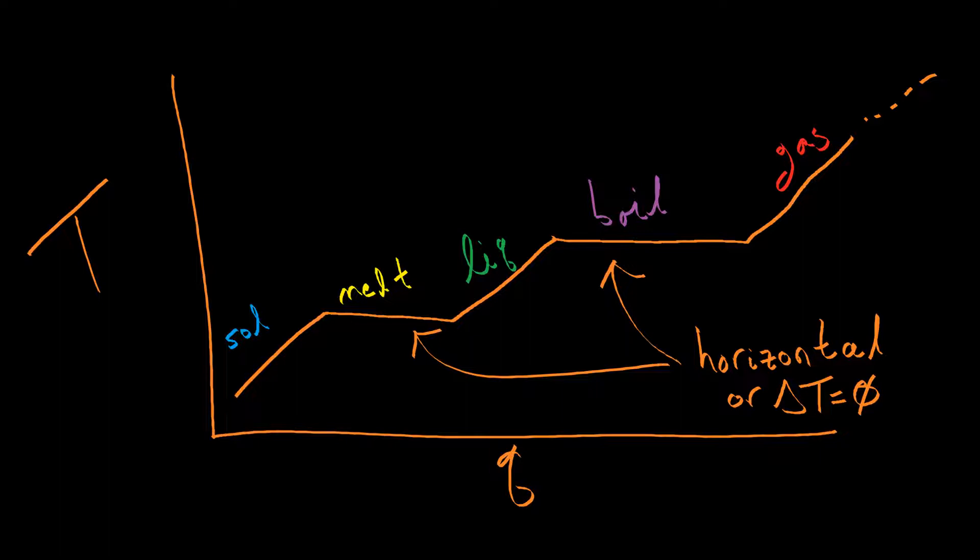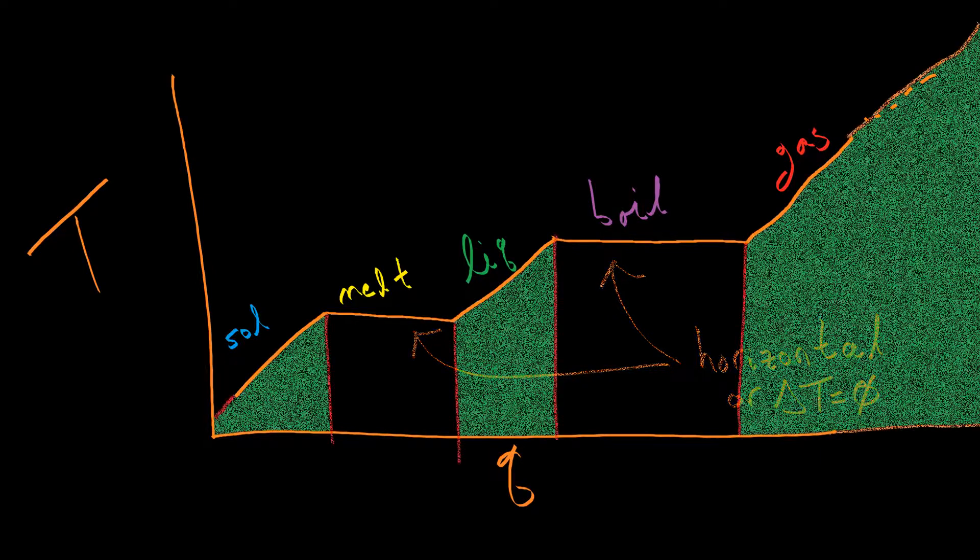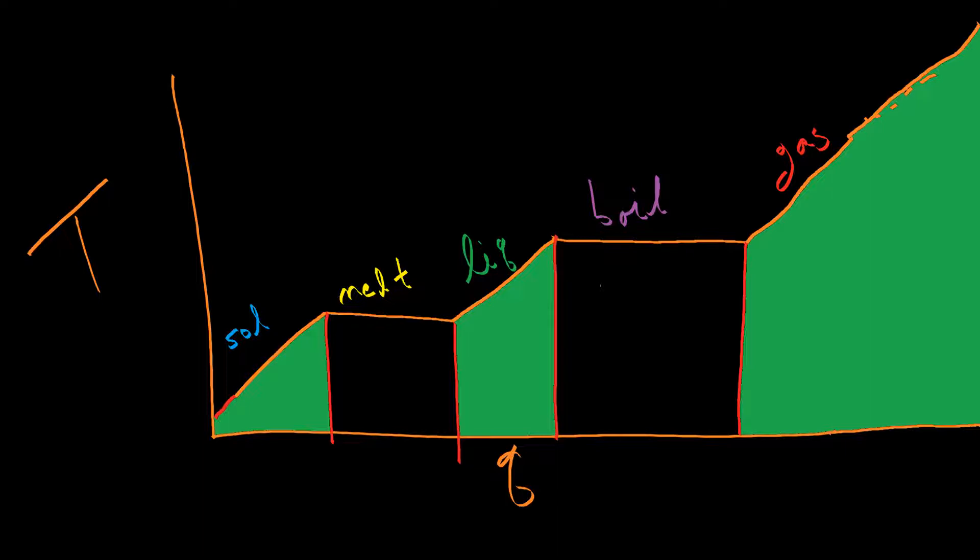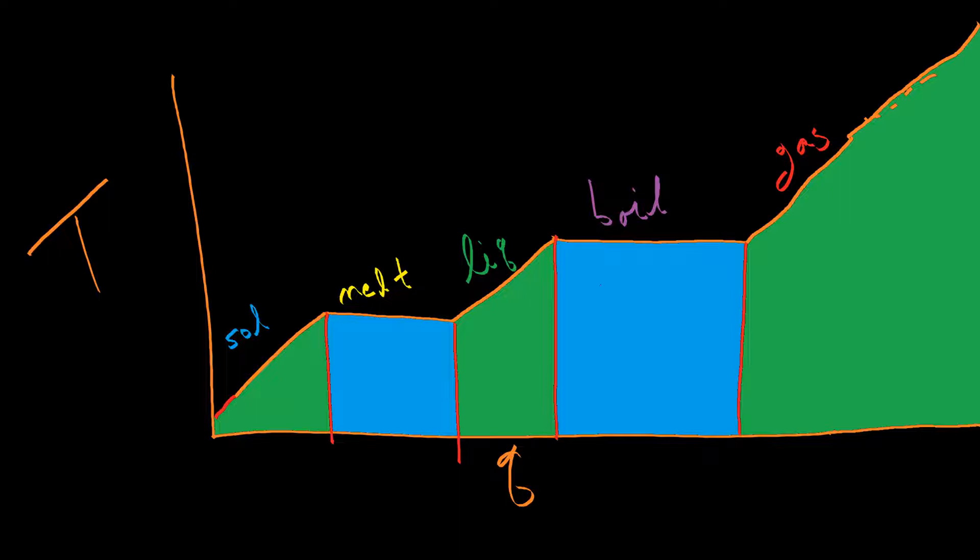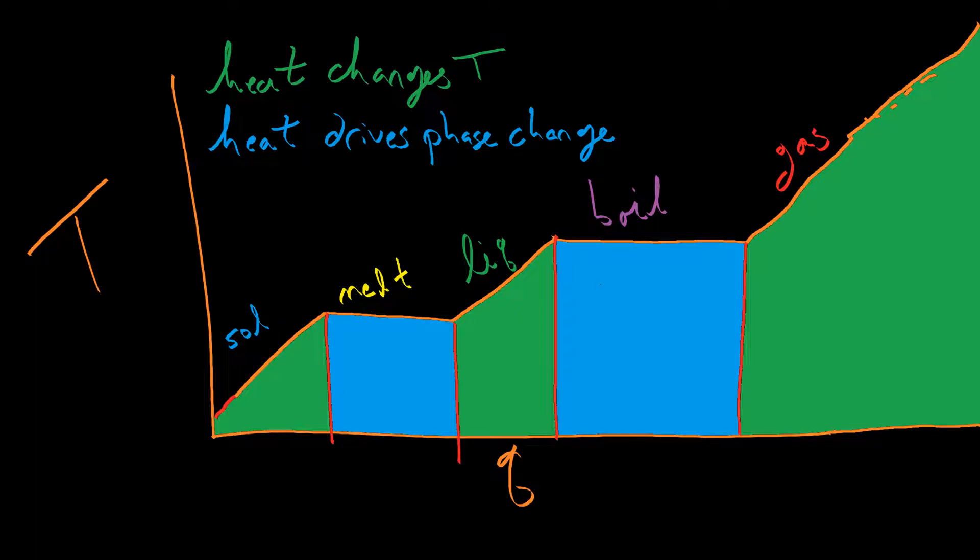So, what that means is that we can really divide this up into two sort of different regions. What we have here, first off, in these green regions, these trapezoids, or the triangle, in the case of the solid, those are places where whenever you put in heat, you're changing the temperature of a substance. And then you have these blue regions here, these rectangles. That is where heat doesn't change temperature. That's where it just changes the phase, from solid to liquid, or liquid to gas. And I want to make that explicit, that when you add heat to a substance, you are either changing the temperature, or you are changing the phase.